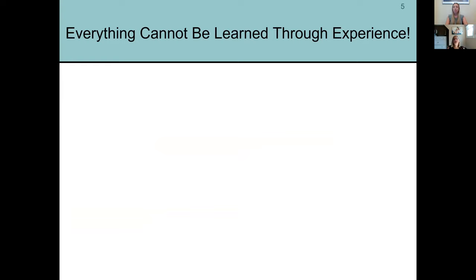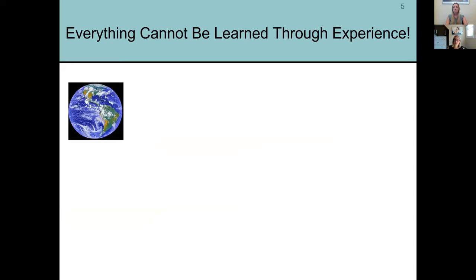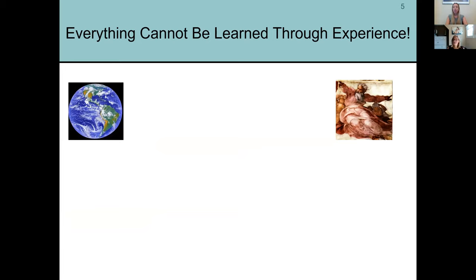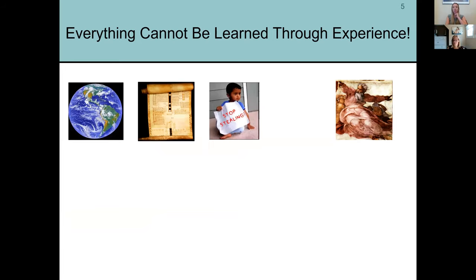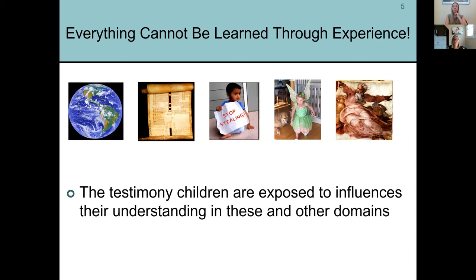This leads us to realize that although allowing children to discover and learn through their own actions and curiosity is valuable, not all learning can be achieved through experience. Beyond the shape of the earth, things like religion, mythology, historical events that cannot be observed, moral judgments — discriminating right and wrong — and our fantasy world must all be explained to children. They're exposed to some testimony, whether from an adult, a television show, a peer, or a book, that influences their understanding across these domains.